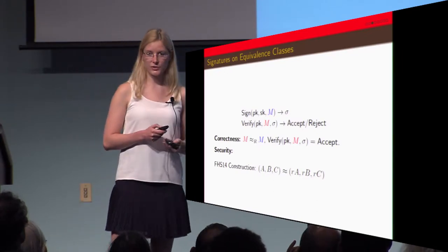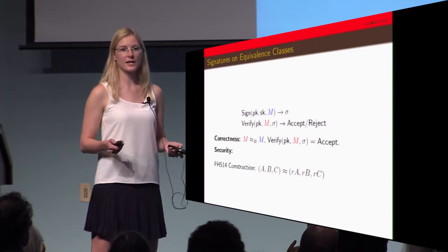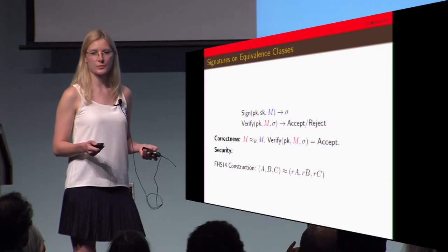There's an interesting construction for this in the FHS14 paper. In that case we're looking at vectors of group elements and the equivalence class is multiplication by a scalar.